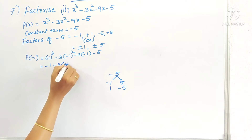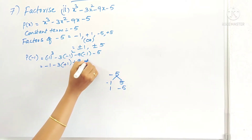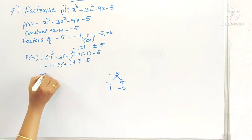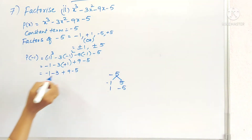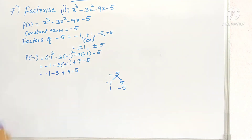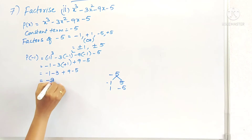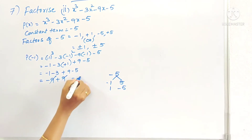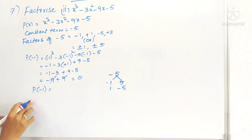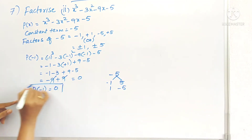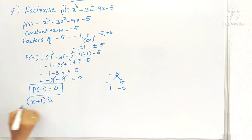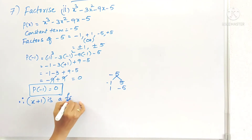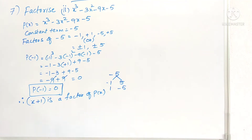Minus raised to an odd power will be minus 1; minus raised to an even power will be plus 1. So we get: minus 1 minus 3 plus 9 minus 5. Here all are negative except plus 9. Adding: 5 plus 3 is 8, plus 1 is 9. So minus 9 plus 9 equals 0. P of minus 1 gives remainder 0, so x plus 1 is a factor of the given polynomial.